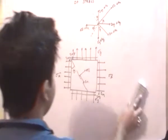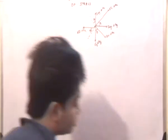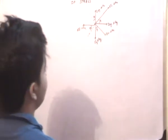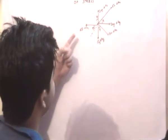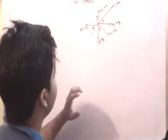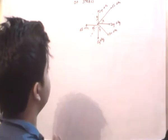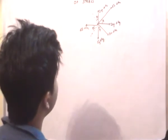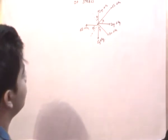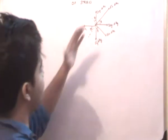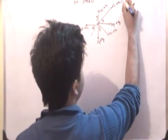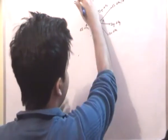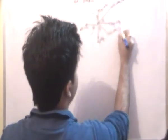Now let us see whether we can find out the values of sigma n and tau n from this free body diagram. Essentially we can. Let us resolve the forces — sigma x, sigma y, tau xy — into two components. When we resolve these forces into two components, we have all the forces either aligned to the n-vector or aligned to the tau vector direction.